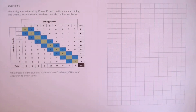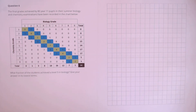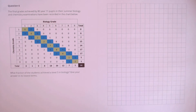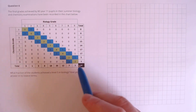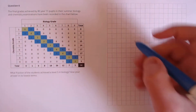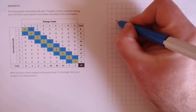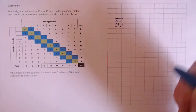Question 6. The final grades achieved by 80 year 11 pupils in their summer biology and chemistry examinations have been recorded in the chart below. What fraction of the students achieved a level 5 in biology? Give your answer in its lowest terms. From the chart, we can see that the total number of students is 80, as stated in the question, so the bottom of our fraction will be 80.